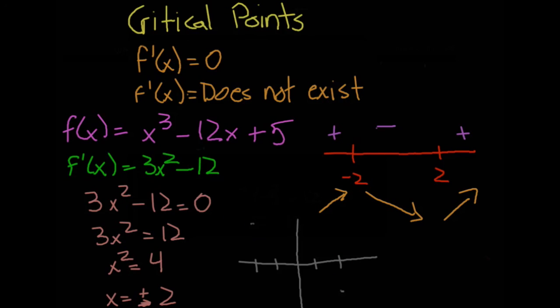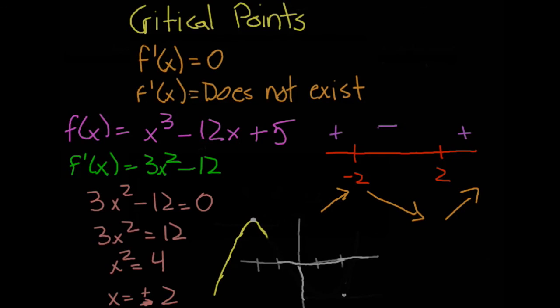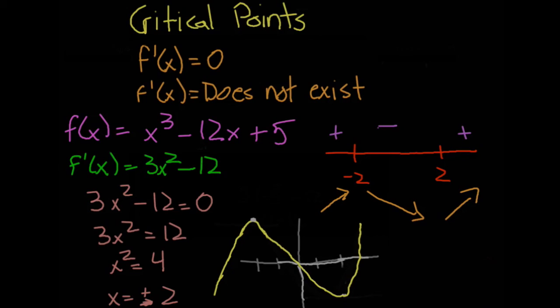So negative 11 is the minimum and 21 is the maximum. The graph looks something like this — it goes up, comes down, and goes back up. At the critical points the derivative equals zero, meaning the tangent line is horizontal.